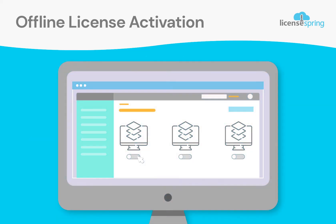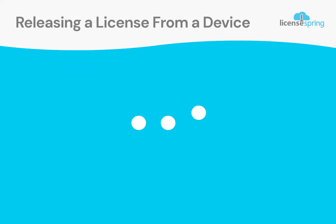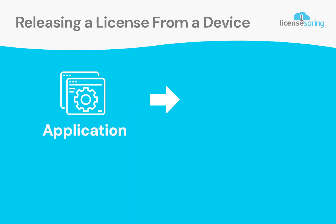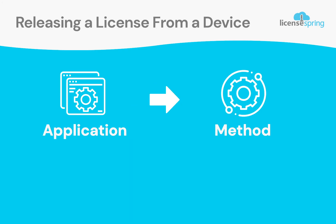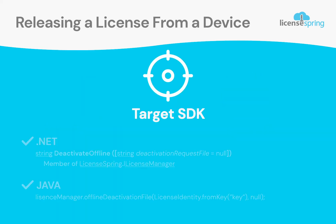That's all you need to activate the license on a device that does not have access to the internet. The process of deactivating a license from an offline device is similar. First, the app must call the method in your target SDK that generates the deactivation file. This method will also remove the local license file.